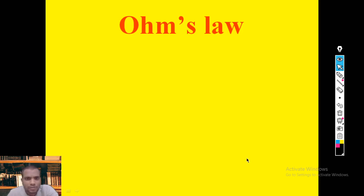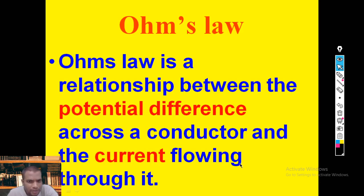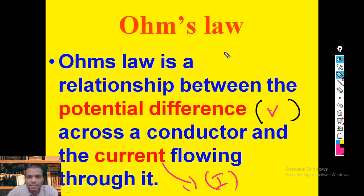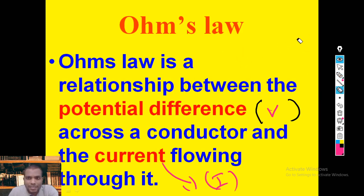Today's topic is Ohm's law. Ohm's law gives a relationship between the potential difference across a conductor and the current flowing through it. This is a very important relation. Ohm's law gives the relation between potential difference — represented as V — and current I. Let us explore this relationship with the help of a simulation.